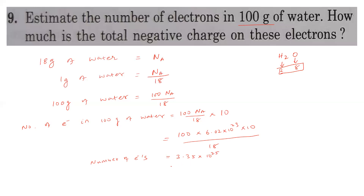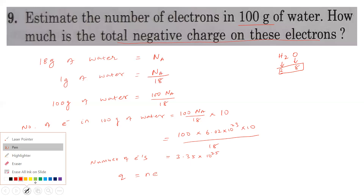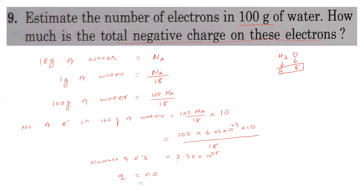The total negative charge on these electrons: Q = N × e = 3.35×10²⁵ × 1.6×10⁻¹⁹ = 5.35×10⁶ coulombs. So the total negative charge in 100 grams of water is 5.35×10⁶ C.